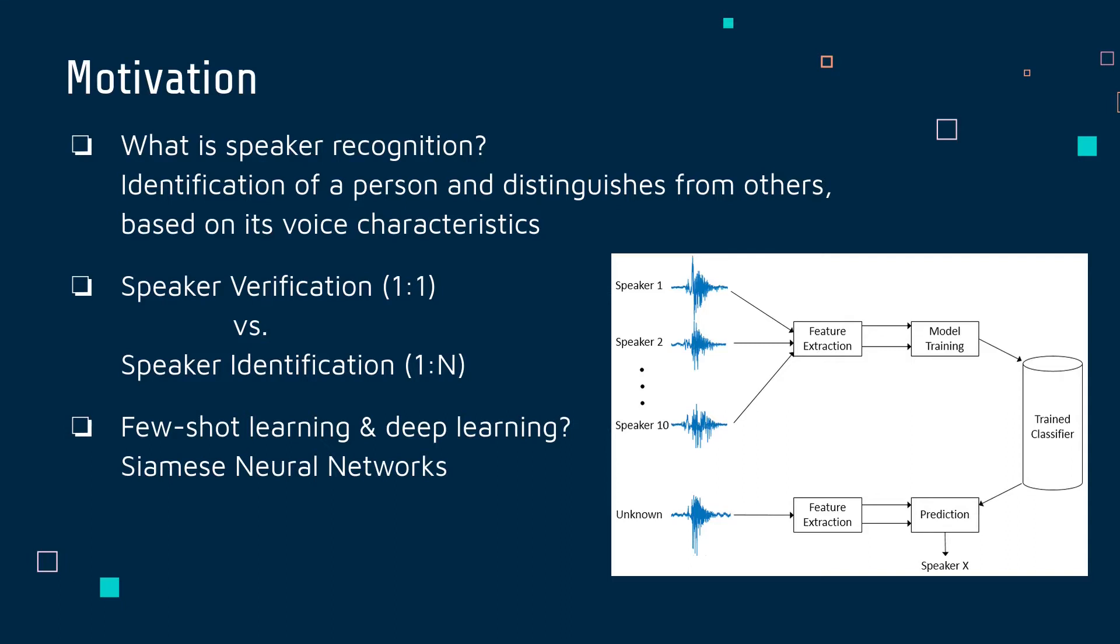There are two main branches, speaker verification and speaker identification. Speaker verification is when a speaker claims to be a certain identity and we aim to verify this claim. Speaker identification is the task of determining an unknown speaker identity. In a sense, verification is a one-to-one match task and identification is a one-to-N match. In this project, we will focus on speaker identification, which is represented in the figure, since a priori it is a more complicated task.